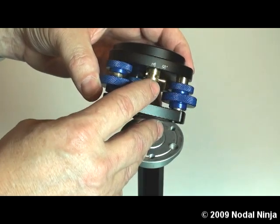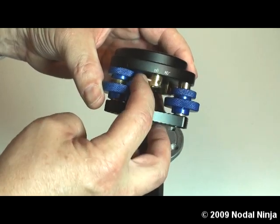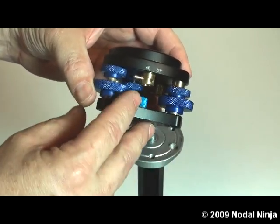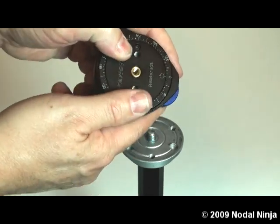...we would take the 60-degree detent lever and rotate this lever so it's pointing to the left. This will give the rotator one click stop every 60 degrees of rotation.